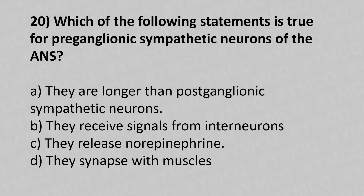Question 20: Which of the following statements is true for preganglionic sympathetic neurons of the ANS? Option A: they are longer than the postganglionic sympathetic neurons. Option B: they receive signals from interneurons. Option C: they release norepinephrine. Option D: they synapse with muscles. The answer is Option C — they release norepinephrine.